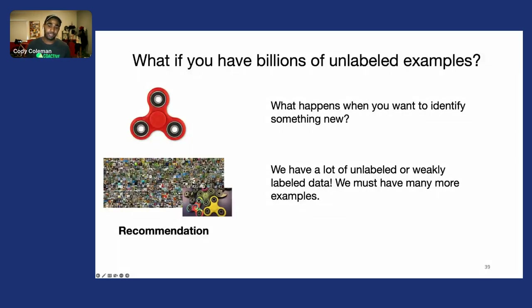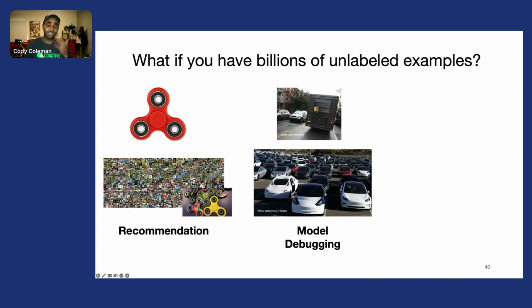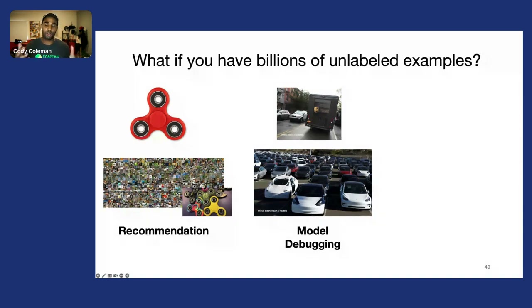The problem is actually finding those examples—they only represent a very small percentage of your overall data. This same type of problem, where you have a very skewed dataset and a tremendous amount of unlabeled data, comes up over and over again.